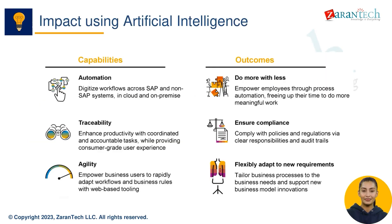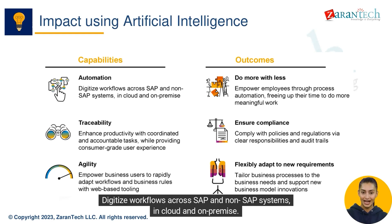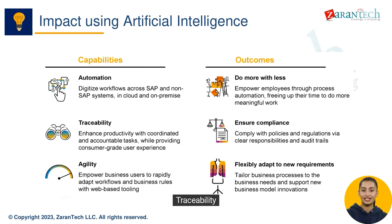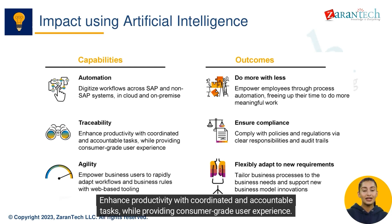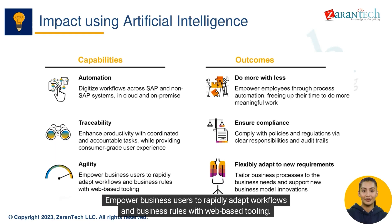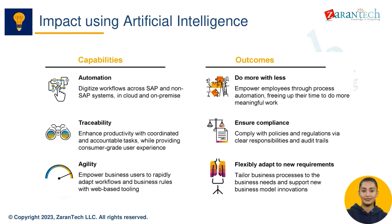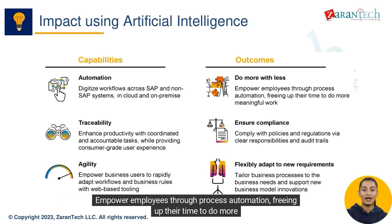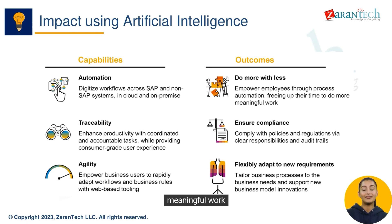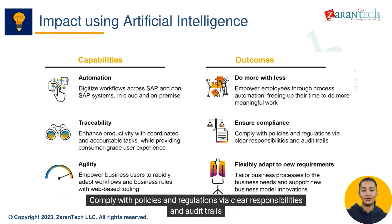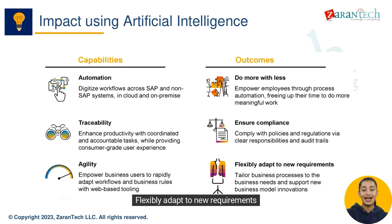The key capabilities include: automation — digitize workflows across SAP and non-SAP systems in cloud and on-premise; traceability — enhance productivity with coordinated and accountable tasks while providing a consumer-grade user experience; and digitally empowering business users to rapidly adapt workflows and business roles with web-based tooling. Outcomes include: empowering employees through process automation to do more meaningful work, and ensuring compliance with policies and regulations via clear responsibilities and audit trails.